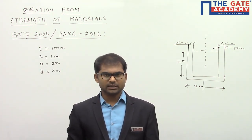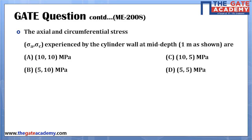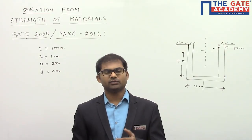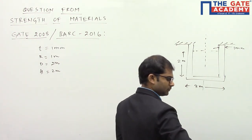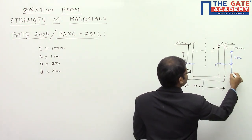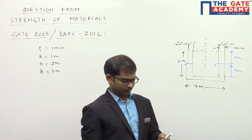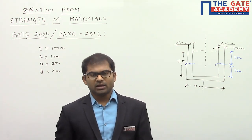In this question they are asking for details at mid-height. Reading out the question: the axial stress σa and circumferential stress σc experienced by the cylindrical wall at mid-depth of 1 meter. So we need to find σa and σc at the mid-height of the cylinder. First, let us calculate the circumferential stress.